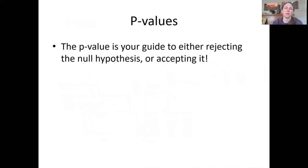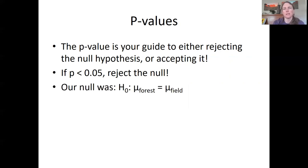So what is this p value thing? P values are basically a guide to whether you're going to reject the null hypothesis or accept it. It's like a yes, no. That's all it really is. So if it's less than 0.05, then you can reject the null hypothesis. Our null hypothesis was that the mean number of ant mounds in forests would equal the mean number of ant mounds in the field. And so at a p value of less than 0.01, we can reject the null hypothesis. They are not equal. The means are not equal.